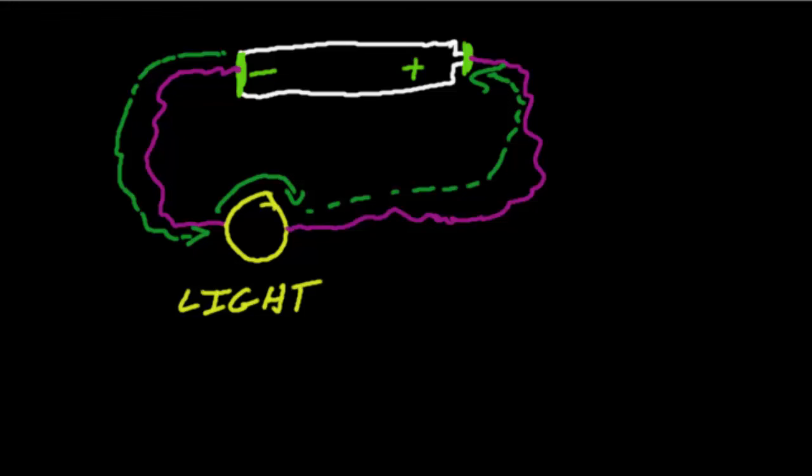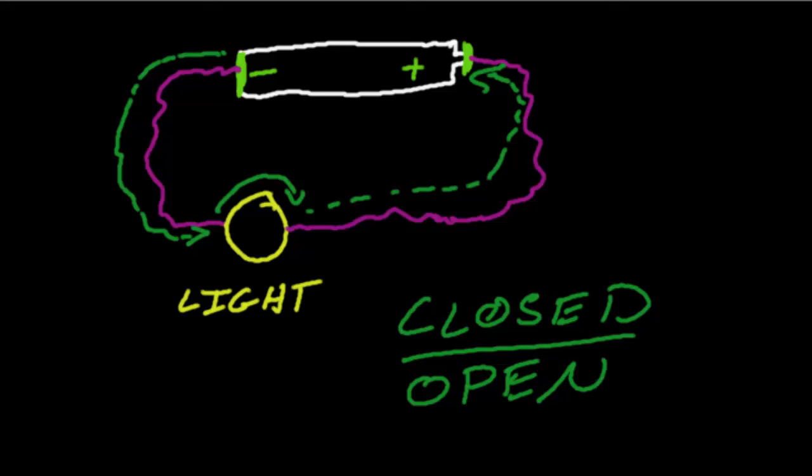So what I really wanted you guys to get today was what a closed circuit is. A closed circuit versus an open circuit. So an open circuit has a gap in it and it will not work. A closed circuit basically means both of the terminals of the battery are connected in some type of way and it will work. It's powered.